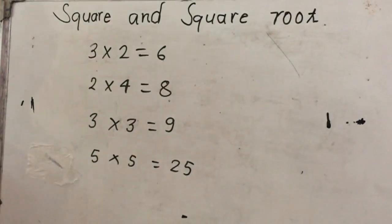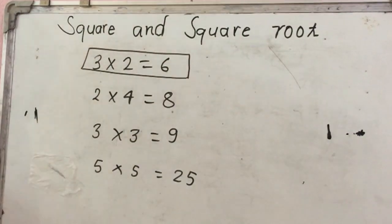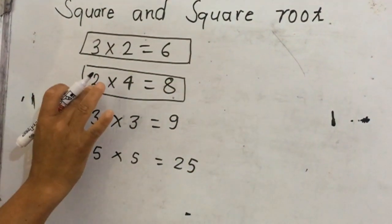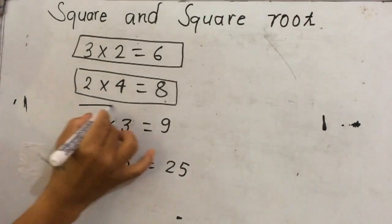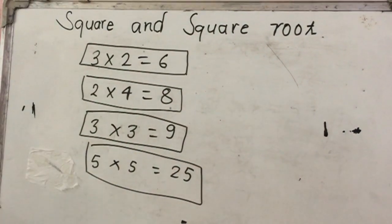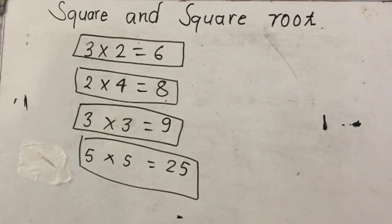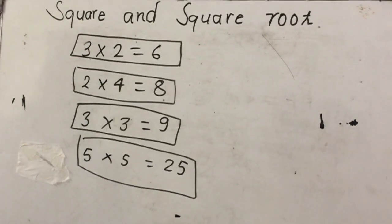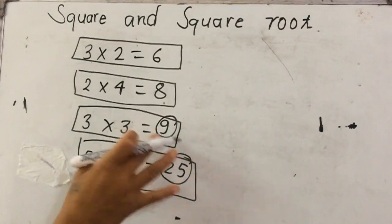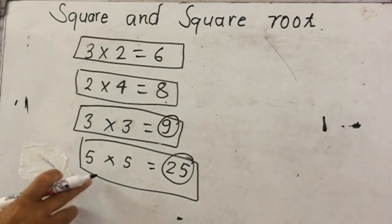Here we have two different types of multiplication. 3 times 2 means we are multiplying two different whole numbers. Similarly, 2 times 4 uses two different whole numbers. But 3 times 3 and 5 times 5 — here we are multiplying the same whole number. When we multiply the same whole number, the product is called a square number. So 9 and 25 are square numbers, because 9 comes from 3 times 3, and 25 from 5 times 5.